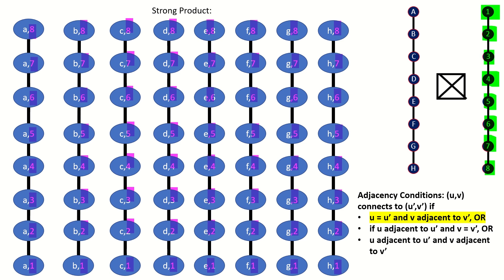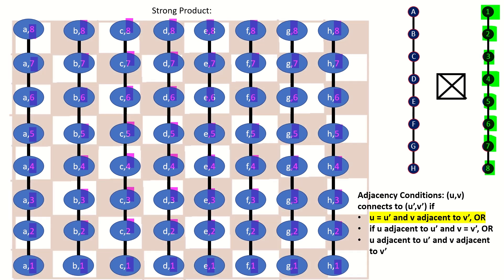This means that all strong product vertices with the same letter and consecutive numbers will connect to each other — each vertex in a column will connect to the vertices one step above and one step below it. This is precisely the property we're looking for in a king's graph, where vertices in the same column but adjacent rows should connect, corresponding to an up-and-down movement of a king on a chessboard.